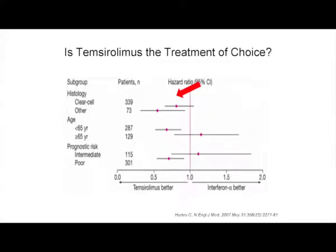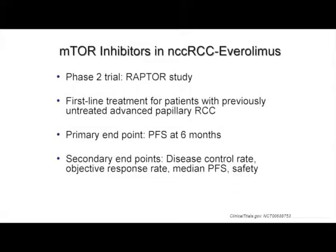We heard a lot about temsirolimus. Based on the Hudes study, 20% of patients did not have clear cell carcinoma. These 20% of patients seemed to have done better than the patients with clear cell carcinoma. Temsirolimus became the de facto treatment of choice for a while for these patients, but they're not really specified who all these patients were — they have different non-clear cell histologies. This led to the everolimus trial, another mTOR inhibitor — another rapalog — called the RAPTOR trial, with the primary endpoint being PFS at six months for patients with advanced papillary tumors.